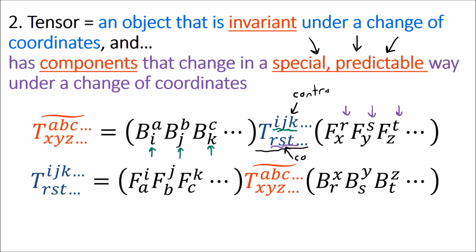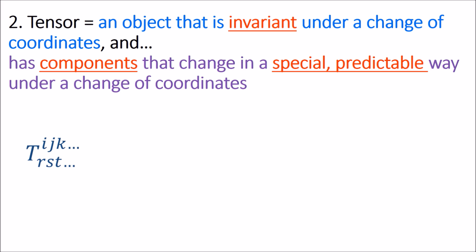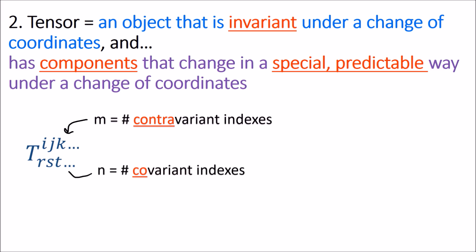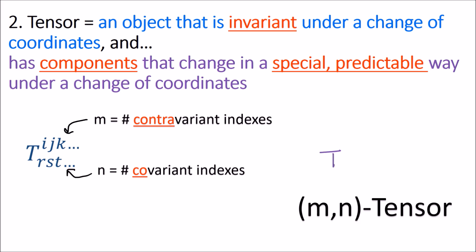When a tensor has M upstairs contravariant indices and N downstairs covariant indices, we call it an M-N tensor. These two numbers are called the tensor's type, and they tell us how many contravariant and covariant rules we need to follow when transforming it.